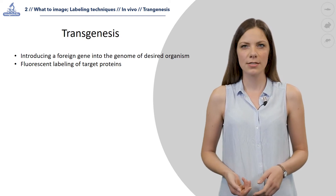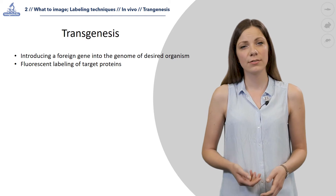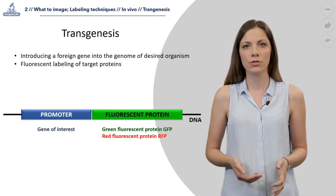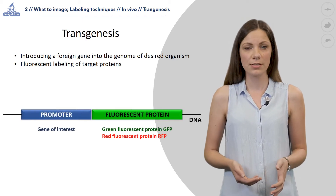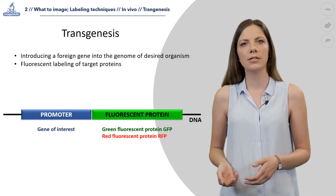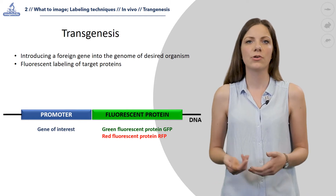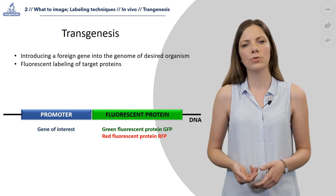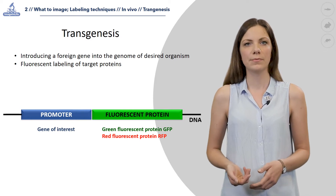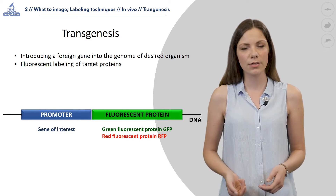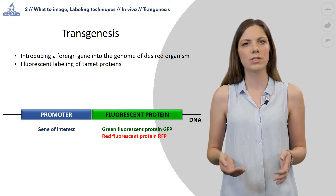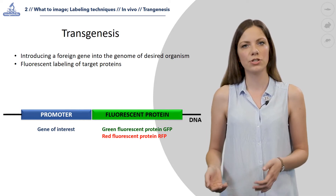To perform transgenesis, we inject a foreign DNA fragment containing the promoter region of the gene of interest and a chosen fluorescent protein in frame with it, such as green fluorescent protein (GFP) or red fluorescent protein (RFP). In this way, the expression of the fluorescent protein will be restricted to the expression of the target gene.